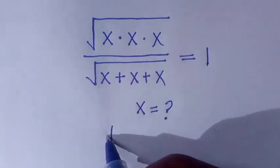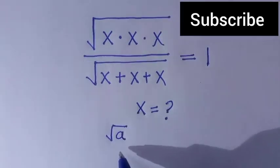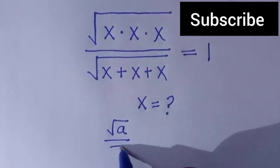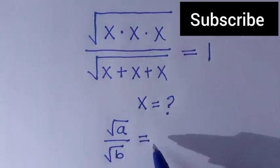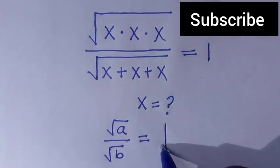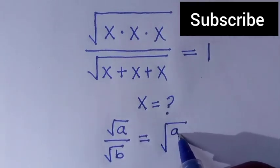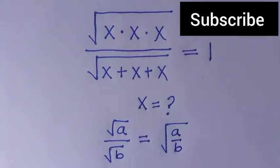We are going to consider from here, suppose we have square root of a divided by square root of b. This is also written as all of them in a general root, then we have a divided by b.